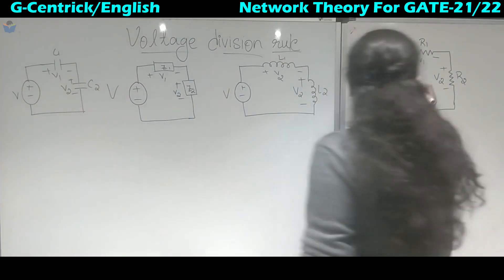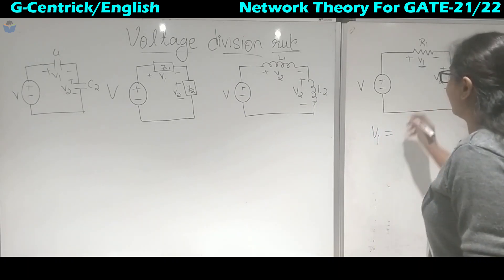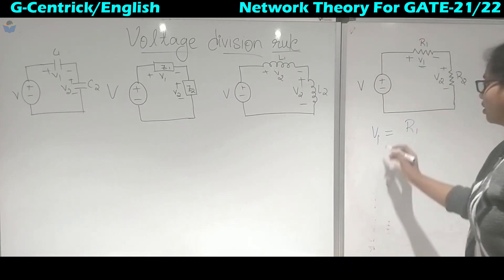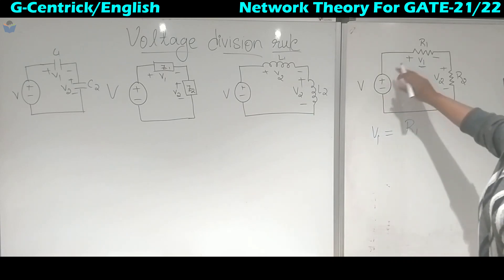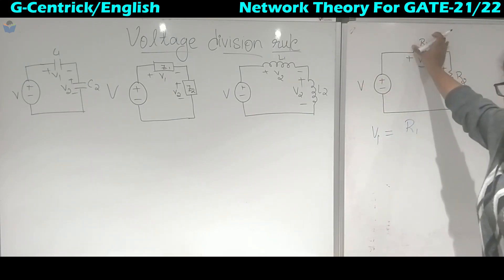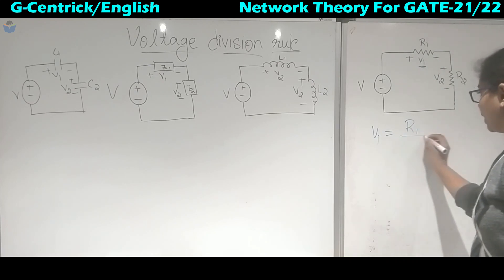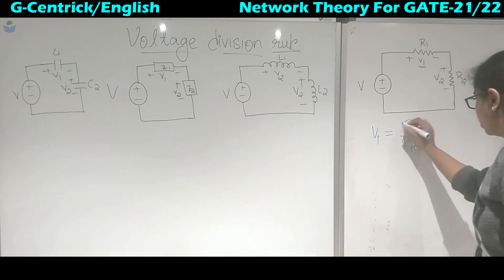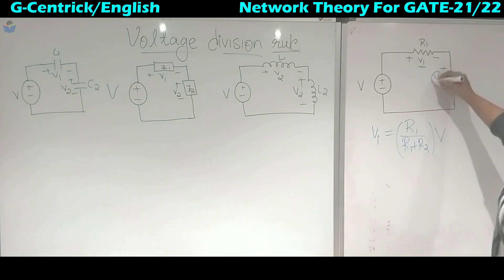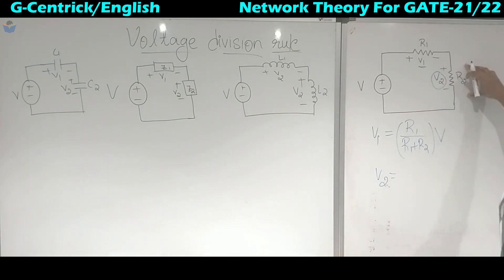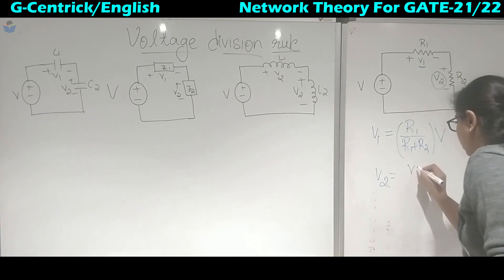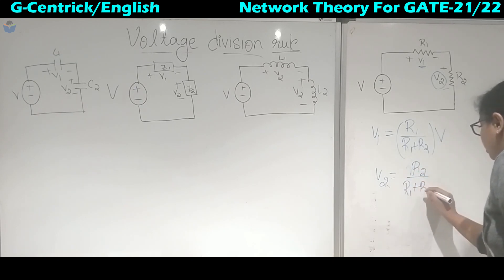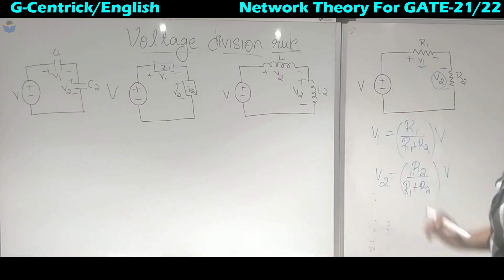To calculate voltage V1, we write it as the voltage of the resistor we want to calculate — that is R1 — over the sum of the two resistors R1 plus R2, multiplied by total voltage V. In the current division rule it was opposite, whereas in the voltage division rule you take that same resistor. Similarly, V2 is R2 upon R1 plus R2, multiplied by the total source voltage.